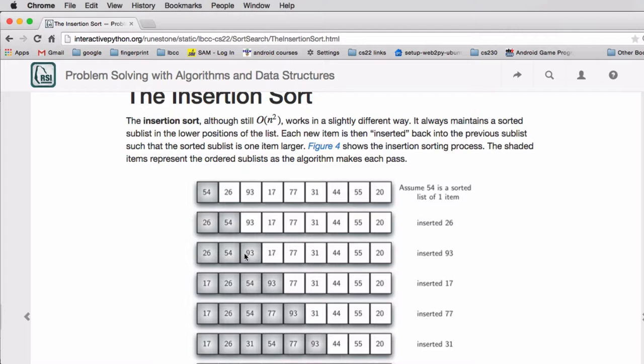As it's failing the compares, it's moving the 93 over, then the 54 over, and the 26 over, and finally it has a slot for 17.